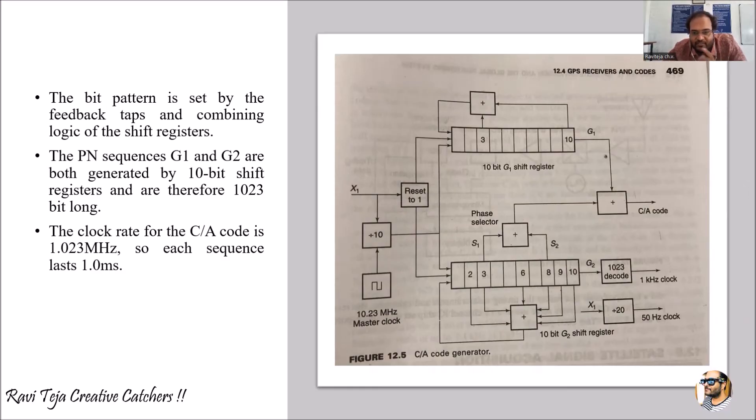Here we are using 10-bit shift registers, so this is one which is for G1 and this is another one which is for G2. One is for G1 shift registers and another one is for G2 shift register. The PN sequences G1 and G2 are both generated by 10-bit shift registers.